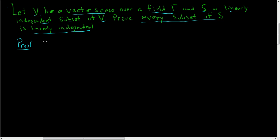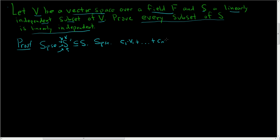Since we have to prove that this is true for every single subset, we have to start by taking an arbitrary subset. Suppose S prime is a subset of S. We need to show that S prime is linearly independent. That means that whenever we have a linear combination of vectors in S prime equal to the zero vector, all of the scalars must be equal to zero. Suppose we have such a linear combination: C₁V₁ + ... + CₙVₙ = 0.